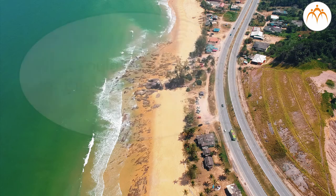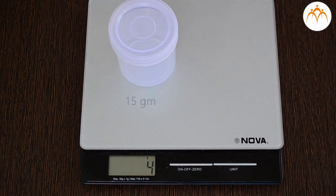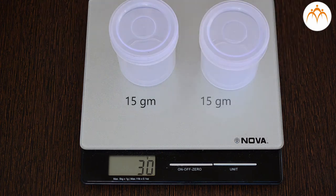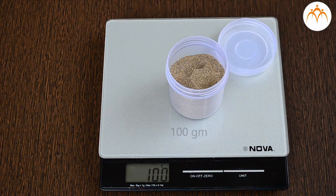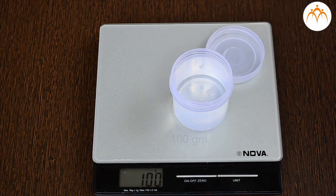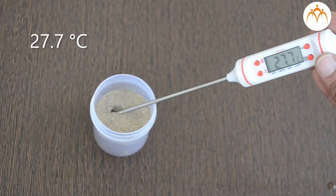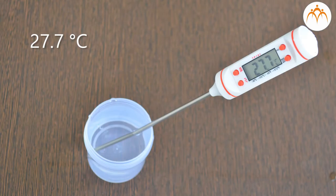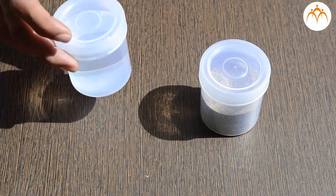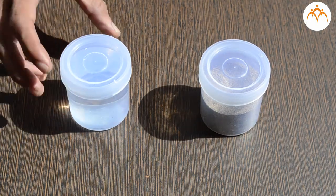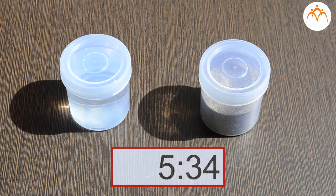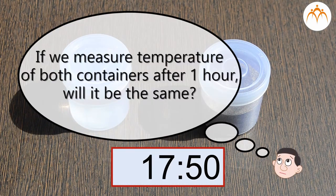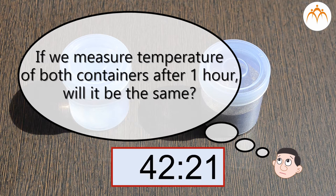You do not have to visit the beach to try this out yourself. Let us take these two containers which weigh the same — one has sand while the other has water in it. They are at the same temperature. Now, let us take them out in the open and keep them in sunlight for 1 hour. If I measure the temperature of the sand and water after 1 hour, will it be the same?